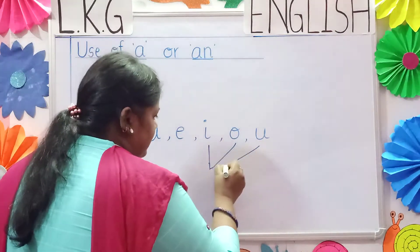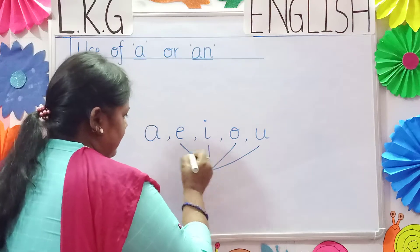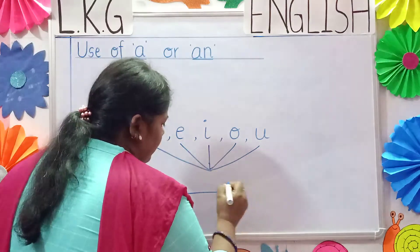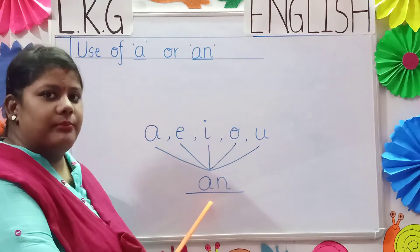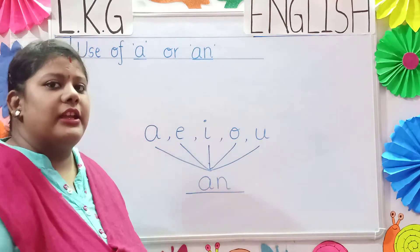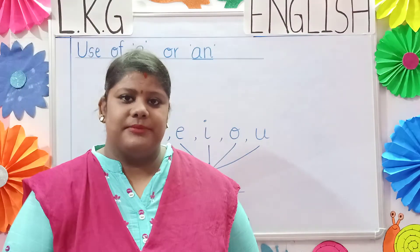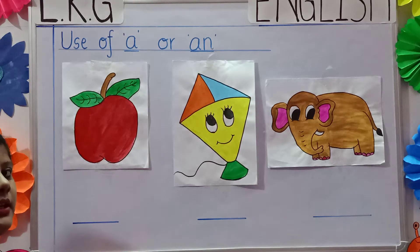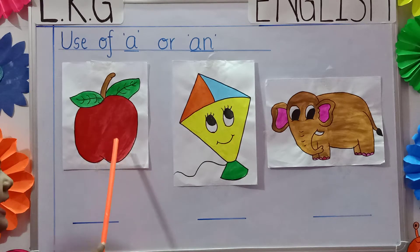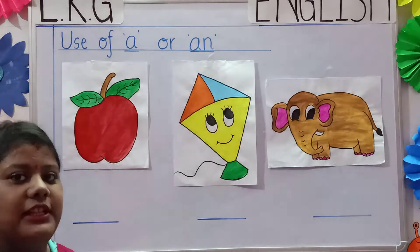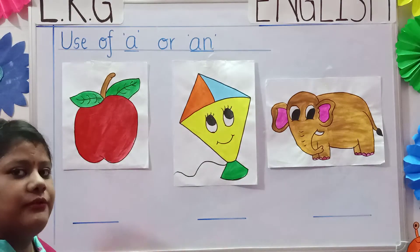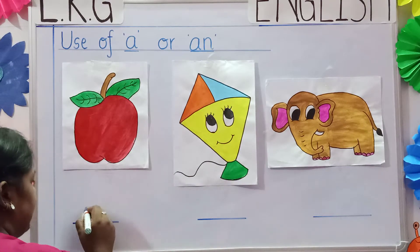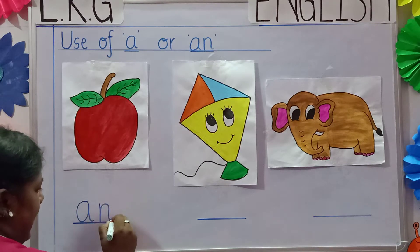When a word starts with A, E, I, O, U, we use the word 'an' before it. Now let us learn some examples. Now see children, what is this? It is a picture of an apple. Apple starts with the letter A, so we will write 'an' — A, N — an apple.